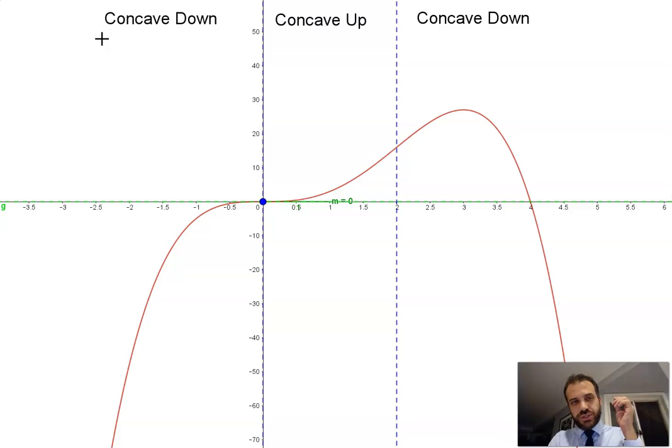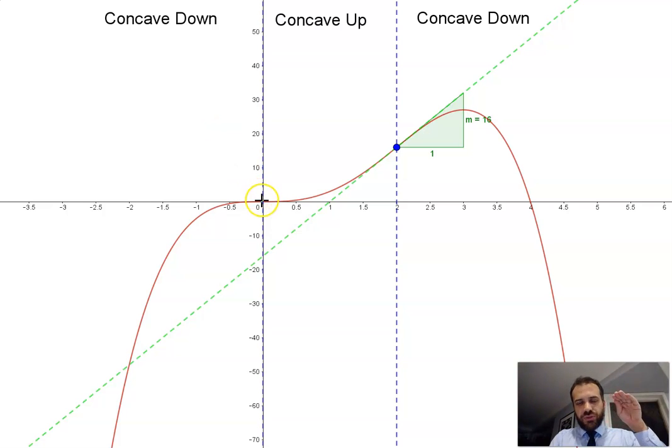You can probably imagine what happens in the concave up phase. At the moment we're right in the middle between concave down and concave up. As I move forward, we go from 0.120, 1.6, 2.5, 8, 9.2, 12.5, 14, 15, until we get to this point at 16. The gradient of our tangent is increasing as we move from left to right in the concave up phase.